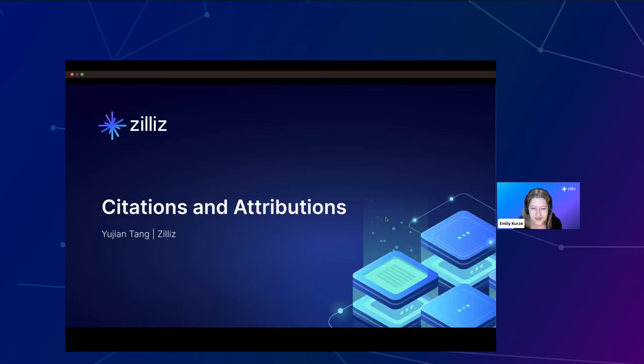To introduce today's session: Unlocking Advanced RAG, Citations and Attributions, and our guest speaker, my colleague Yujin Tang. Yujin is a developer advocate here at Zillus. He has a background as a software engineer working on AutoML at Amazon. He studied computer science, statistics, and neuroscience with research papers published to conferences including IEEE Big Data. He enjoys bubble tea, spending time with his family, and being near water. Thanks for joining us today, Yujin. Welcome.